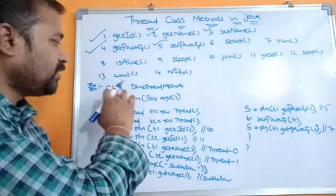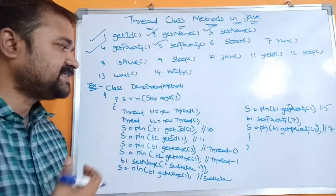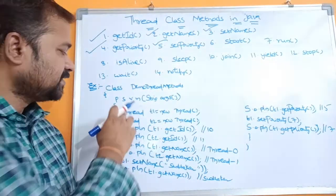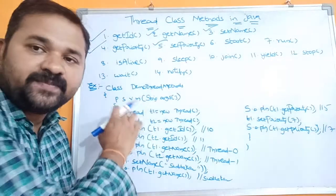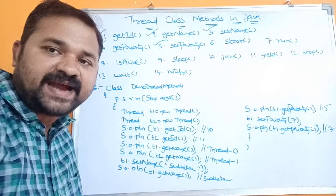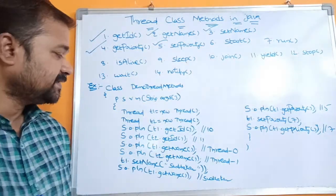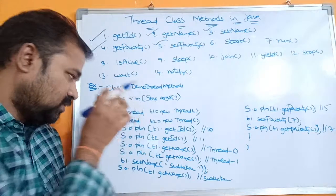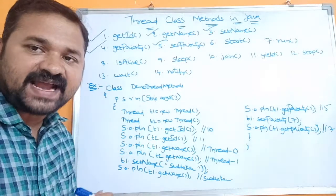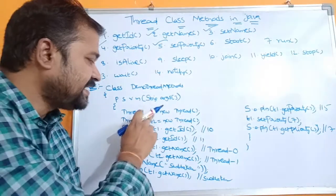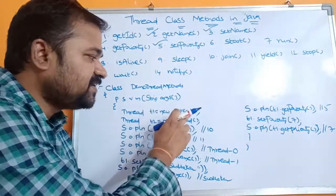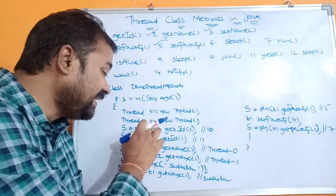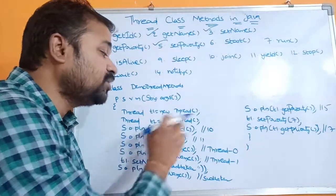Here the name of the class is DemoThreadMethods, and this is nothing but the main method — public static void main String args. Here totally two objects are created for the Thread class: Thread t1 = new Thread() and the second object is Thread t2 = new Thread().